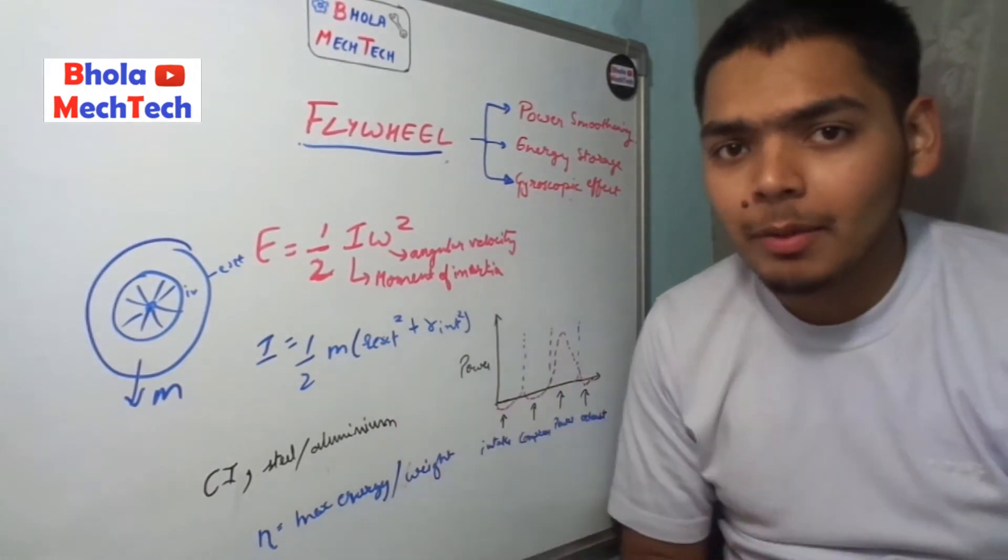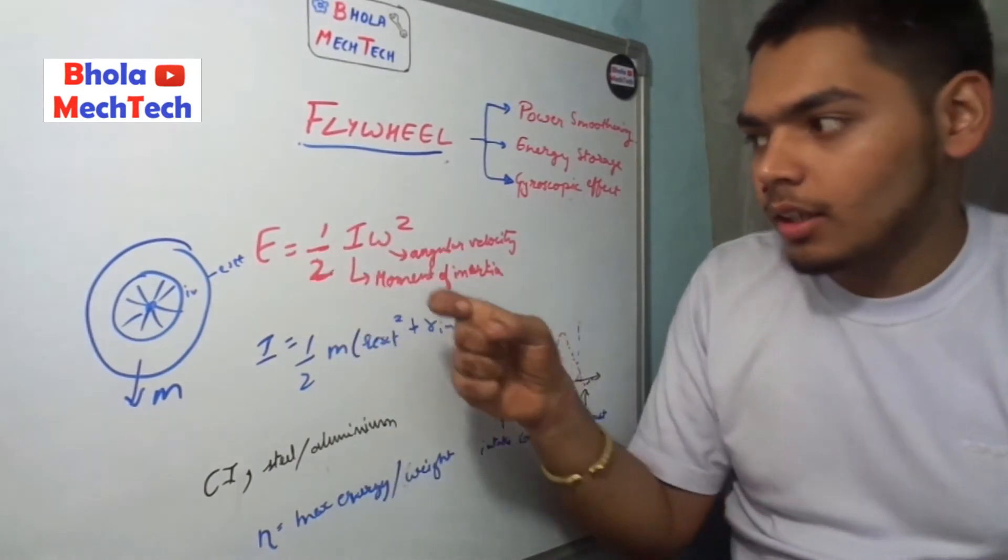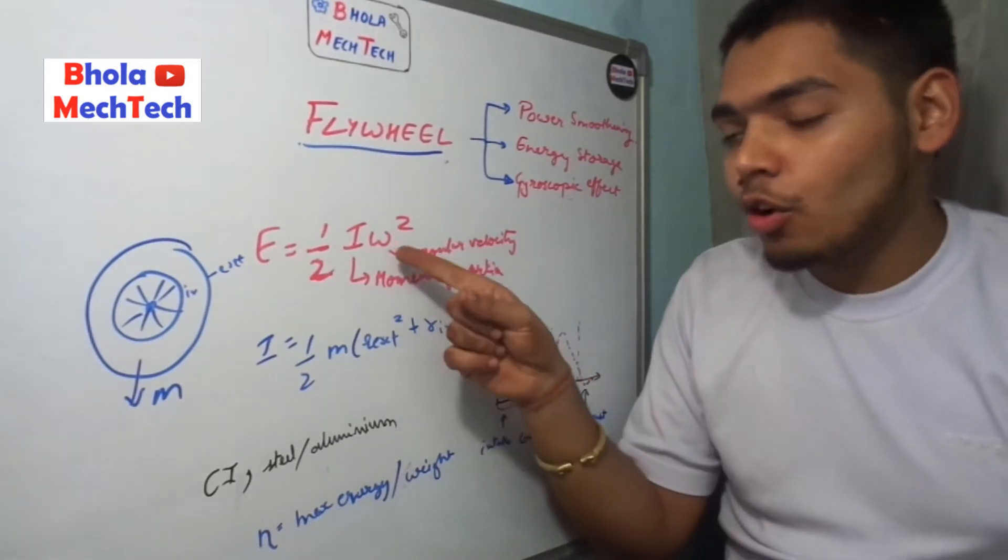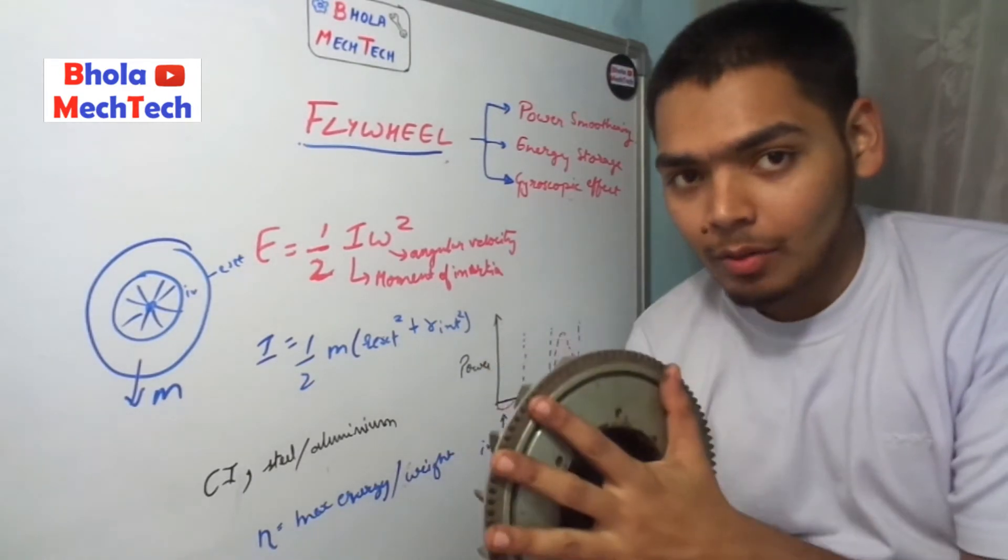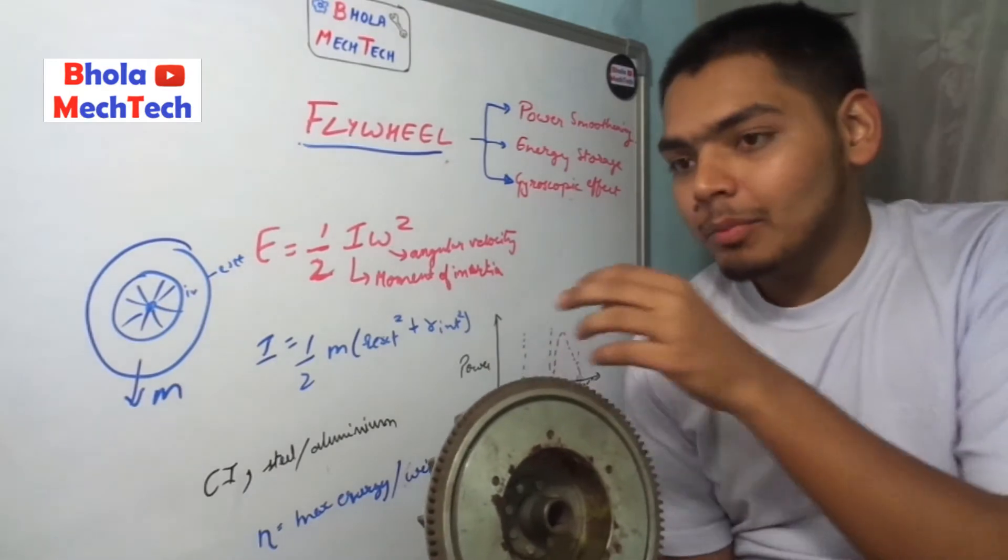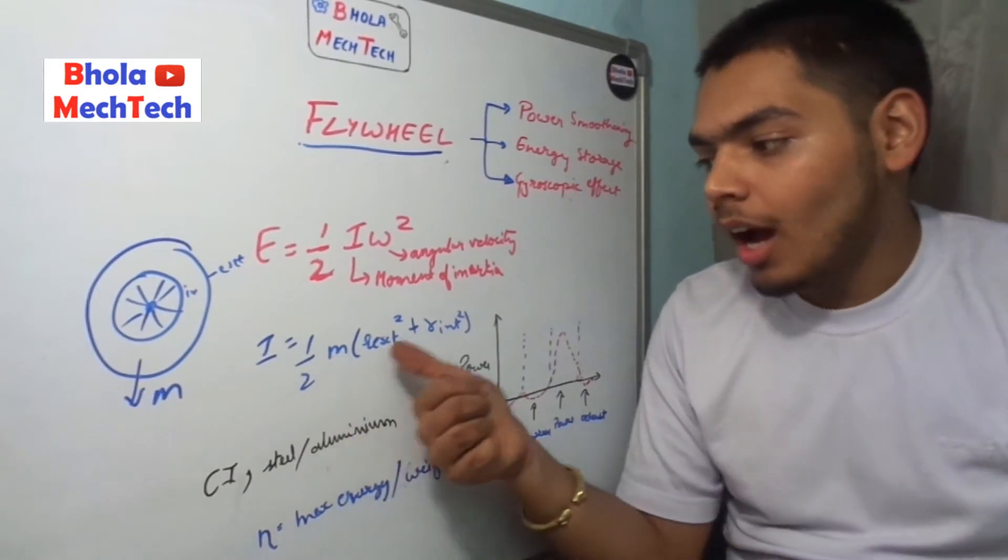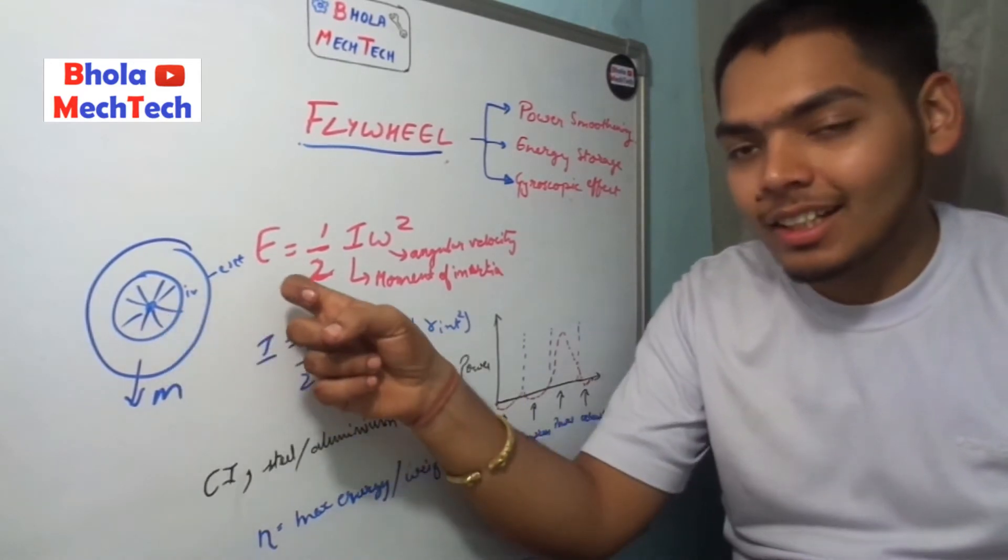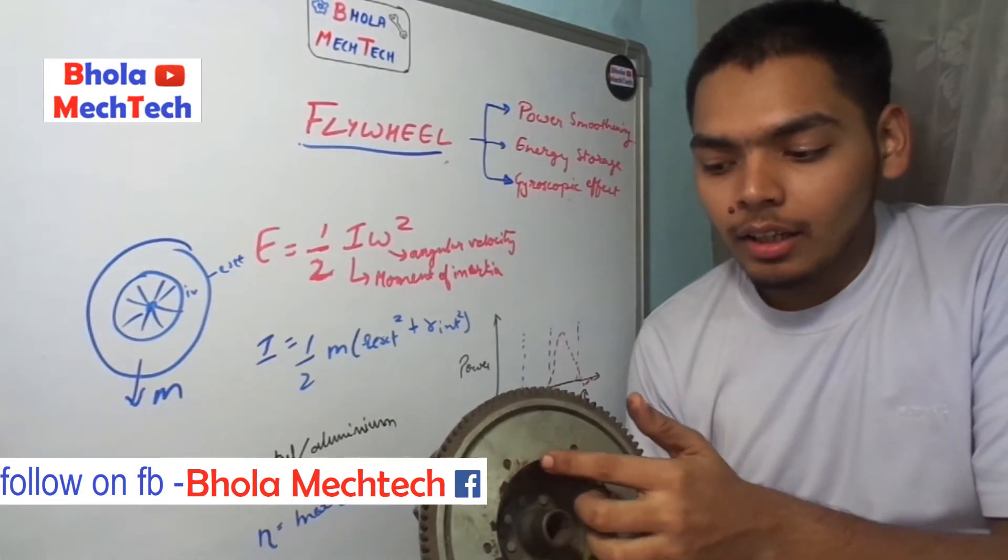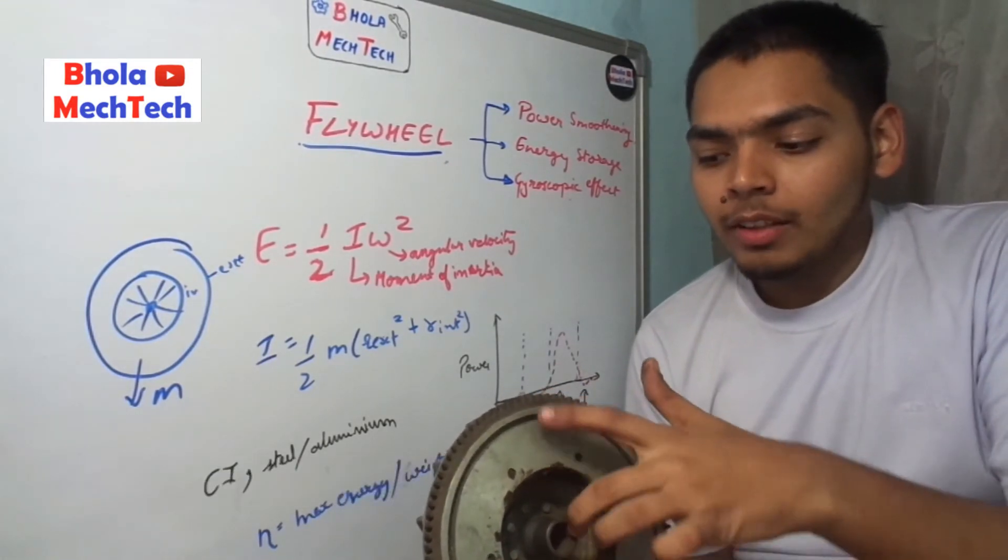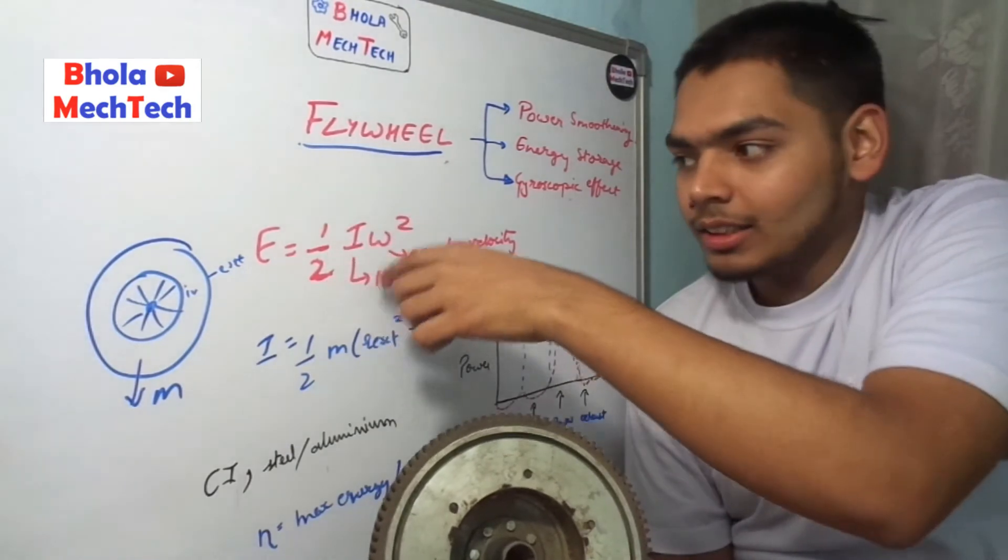There are several mathematical formulas about it. It stores energy in the formula like half I omega square, where I is the moment of inertia of this wheel and omega is the angular velocity. The moment of inertia can be calculated by half m times r external squared plus r internal squared, where r external is the radius of the external wheel and r internal is the internal radius of the wheel. When both of these are added we get the moment of inertia of the wheel.